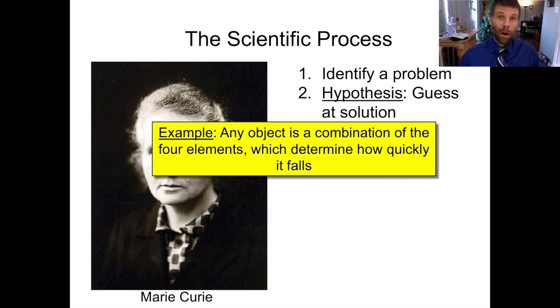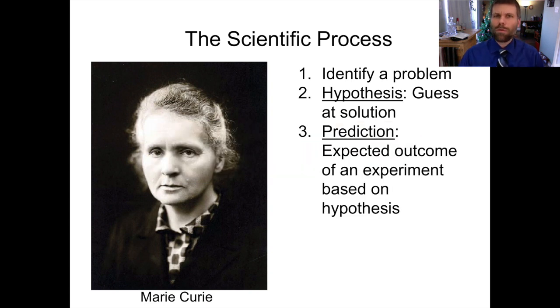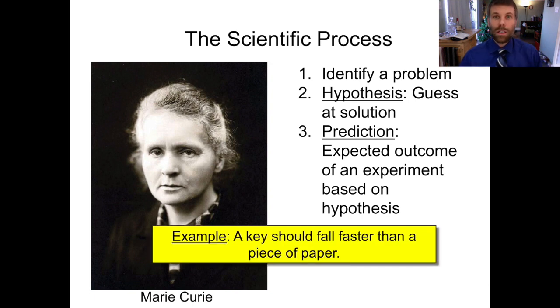Once we've got our hypothesis, we need to use it to make a prediction. And I sort of walked through that already, but let's make our prediction concrete. So let's take that hypothesis of the four elements due to the ancient Greek philosophers and make a specific prediction. We could predict that, say, a key should fall faster than a piece of paper.